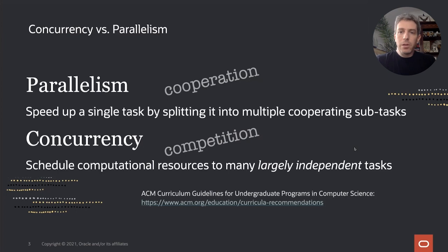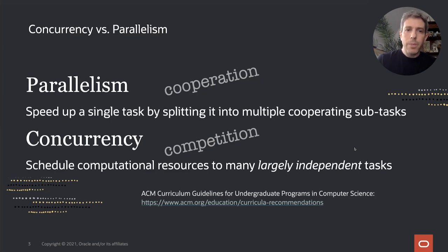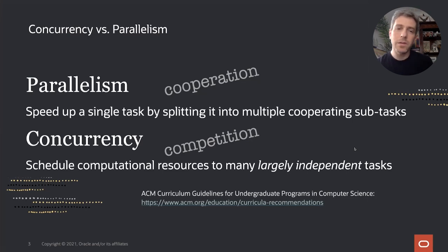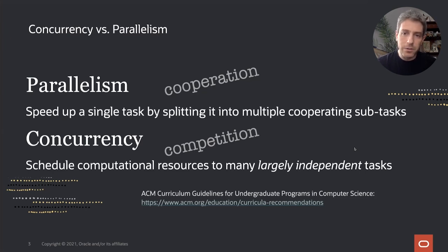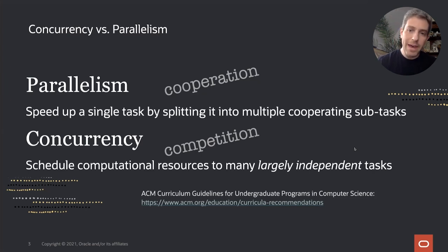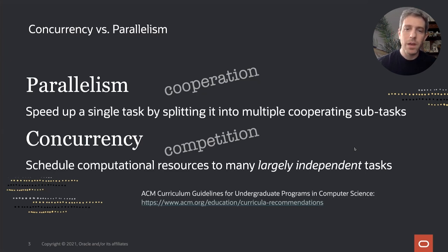The definitions of parallelism and concurrency I'm using are in line with the computer science teaching guidelines of the ACM. Parallelism is the problem of speeding up the execution of a single task by splitting it into multiple pieces that are then worked on by cooperating subtasks running on different processing units. In Java, the main feature that addresses parallelism is parallel streams, or if you want to go lower than that, Spliterator, which as its name suggests splits up work, and the fork join pool.